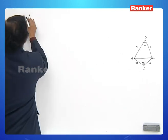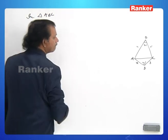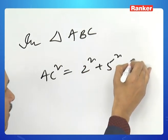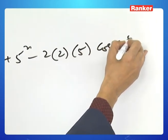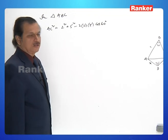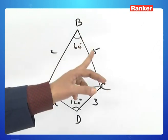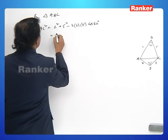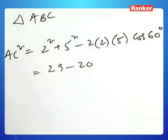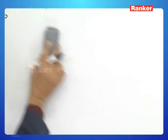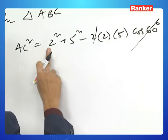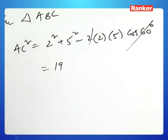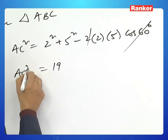From triangle ABC, using the cosine rule: AC² = 2² + 5² − 2·2·5·cos 60° = 4 + 25 − 20·(1/2) = 29 − 10 = 19. So AC² = 19.